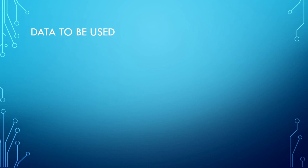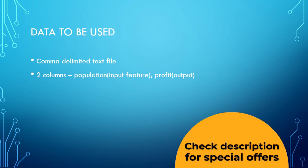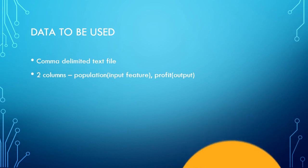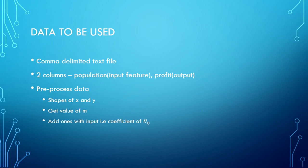So without further ado let's get started. The data we are going to use is a comma-delimited text file with two columns: the first column is the population of the cities and the second column has the values of profit. After importing this data we would like to pre-process it, ensure the shapes of x and y variables are correct, get the value of m, and add ones to x as the coefficient of theta zero.